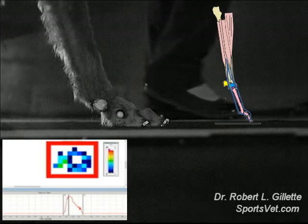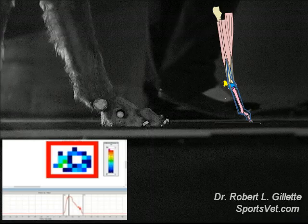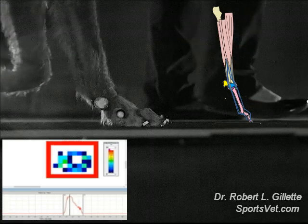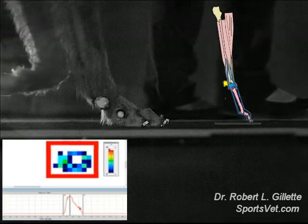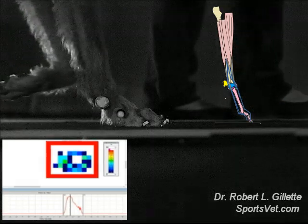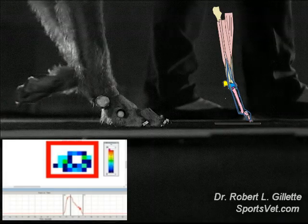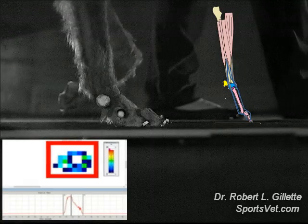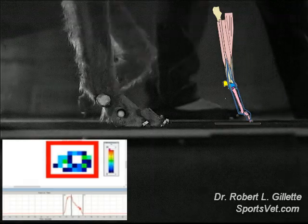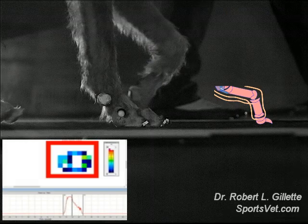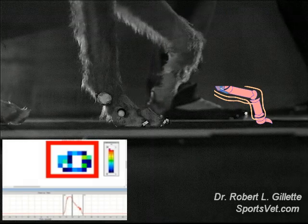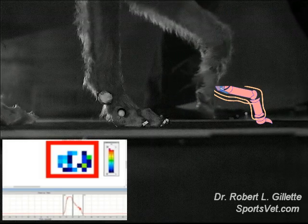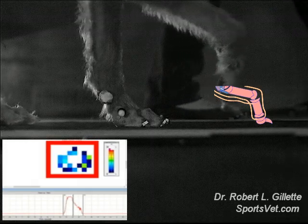The distal limb includes the region from the elbow to the paw. This includes the bones, joints, and ligaments of the toes, metacarpals, carpus, and the insertions of the digital flexor and extensor muscles. The digital flexor and extensor muscles insert on the second and third phalangeal bones.